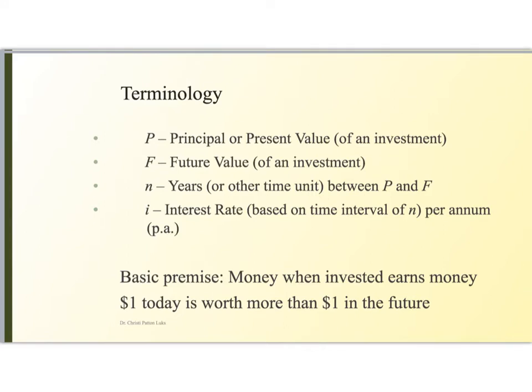So our basic terminology, you've probably seen this before. P is either the principal value or the present value of an investment. F is the future value of that same investment. We're going to invest it for a number of years n, and we're going to do this at an interest rate of i. Now this interest rate is based on the same time interval as n, so it might be annually, but it actually could be monthly or maybe every 10 years they're going to collect interest. If you're doing this on an annual basis, frequently we list it as being an interest rate like 8% PA, meaning per annum or per year.